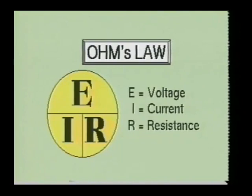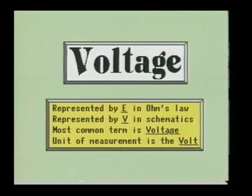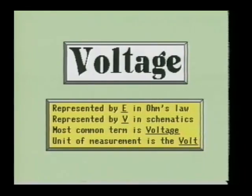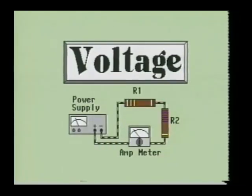Before going any further into Ohm's Law, let's learn a little bit about voltage, current, and resistance to find out how each of these affect the circuit. The first variable we shall look at is voltage, represented by the letter E in the Ohm's Law equation. Other technical terms for voltage are electromotive force, difference of potential, IR drop, and volts. Voltage is measured in a unit called the volt, and can be thought of as the pressure which causes the electrons to flow in the circuit. Without this pressure, the electrons would not flow. The greater the pressure, the more the electrons will flow through the circuit. If the resistance does not change and the voltage doubles, the electrons flowing through the circuit will also double.